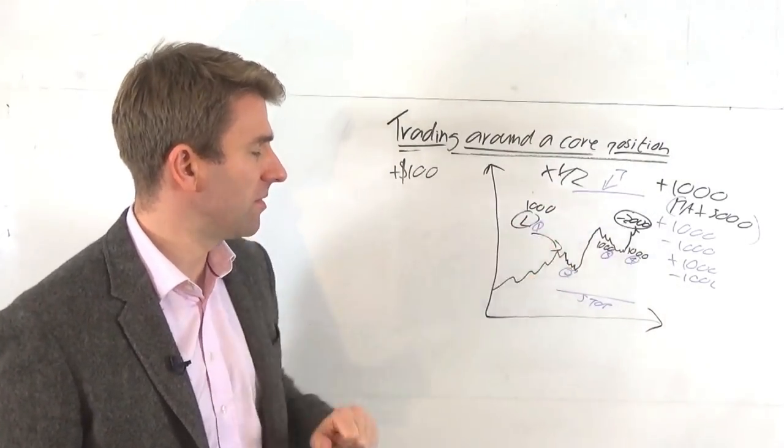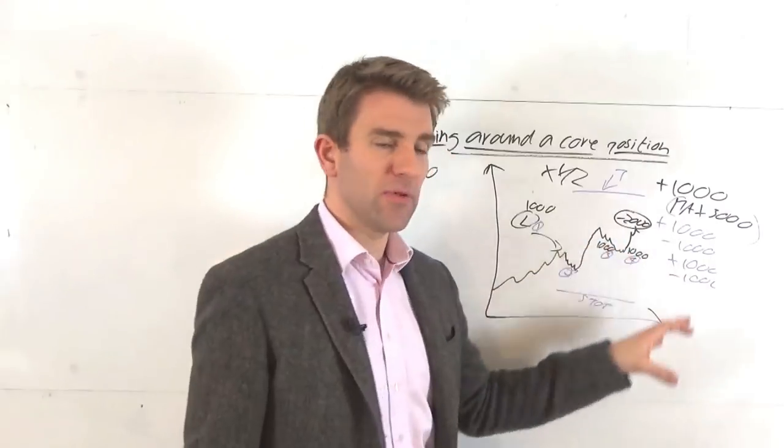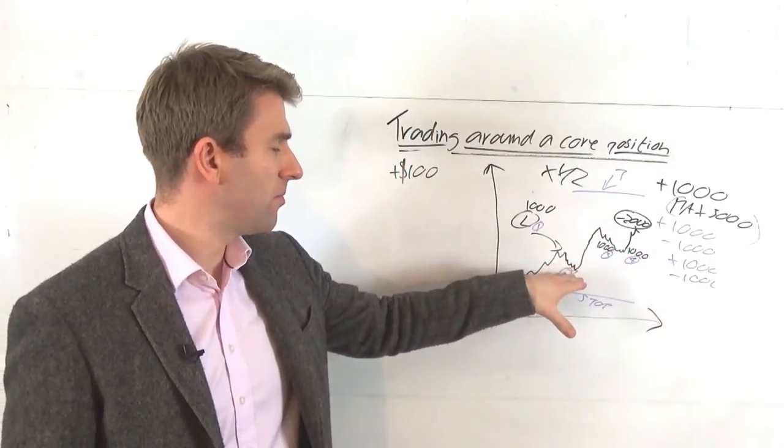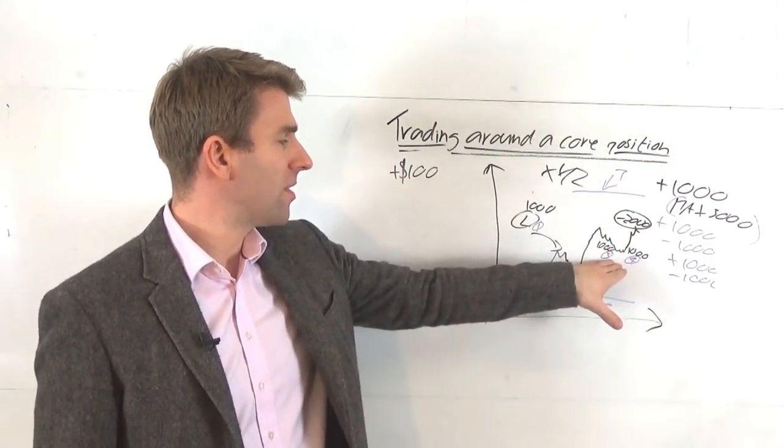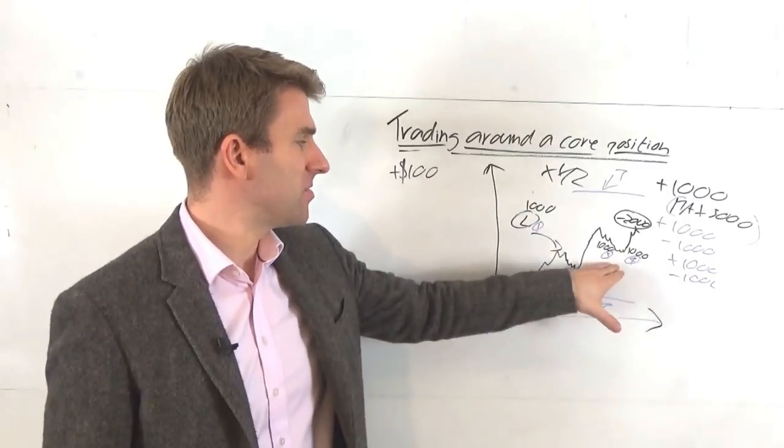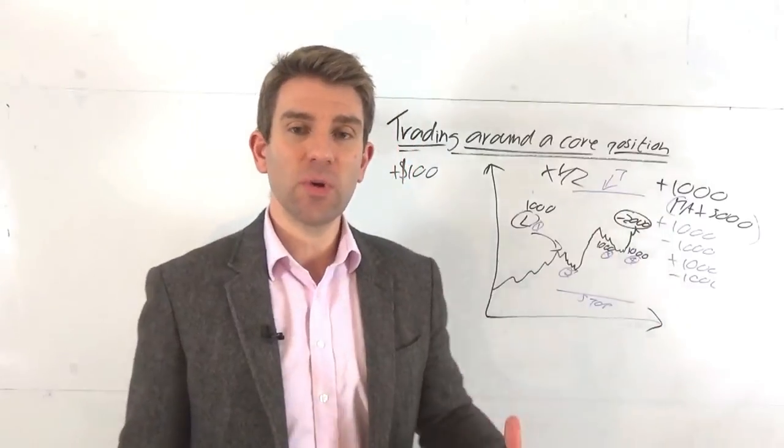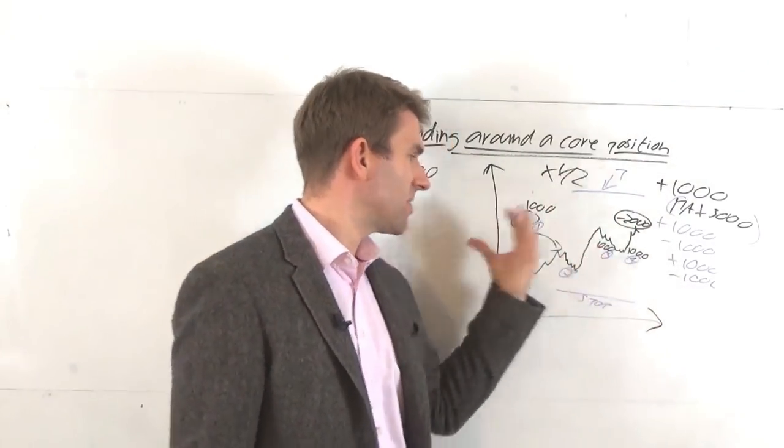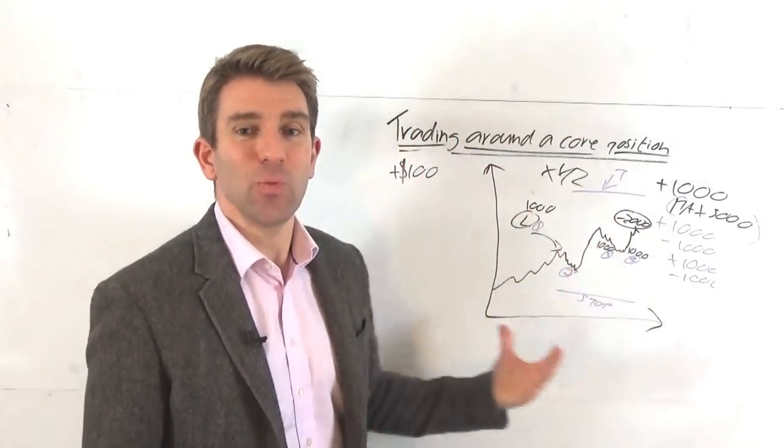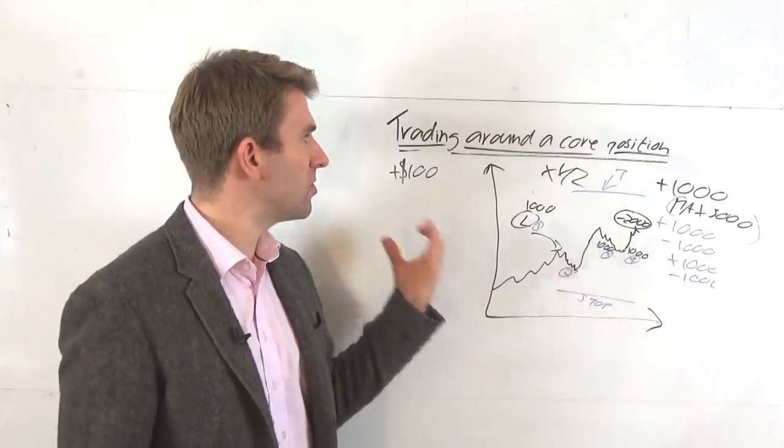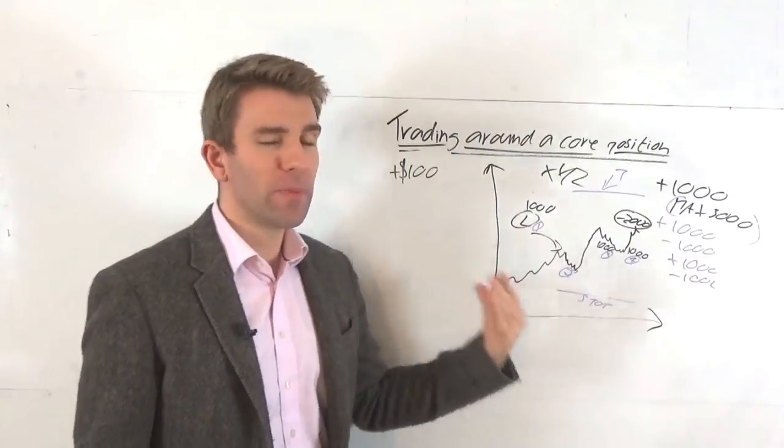On top of that are multiple other trades. We've had a trade off here from point two up to the highs. We bought again here, we bought again here. This happened to be two buys before we closed it, but we're scalping around a position as well. So we're trading individual setups like these, buying these pullbacks within a core long position.